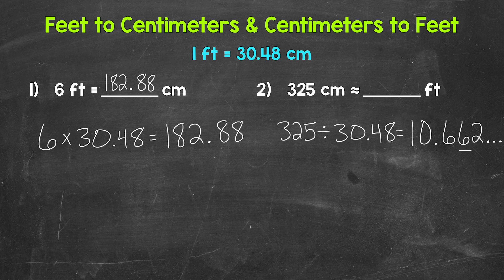So I'm going to cut it off after the thousandths and round to the hundredths. So we have a six in the hundredths with a two in the thousandths. So this rounds to 10.66. So 325 centimeters is approximately 10.66 feet.